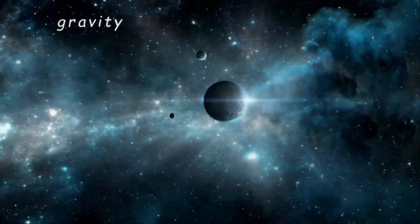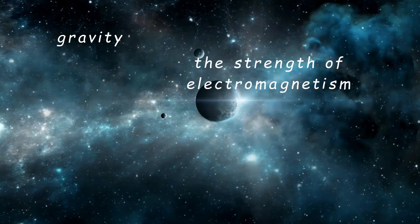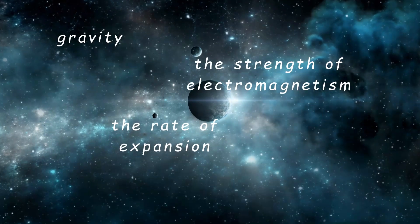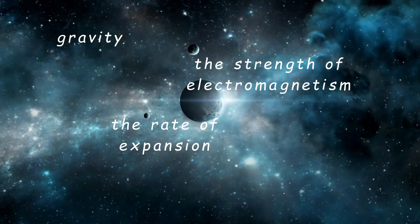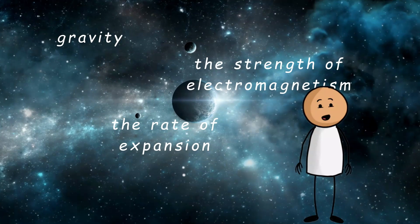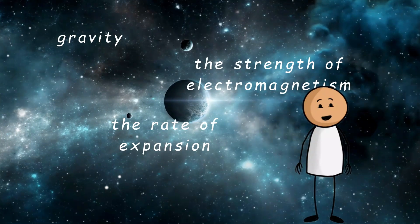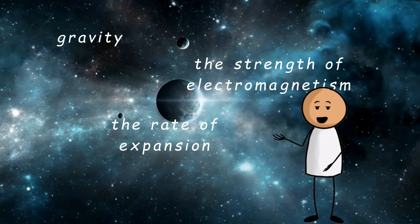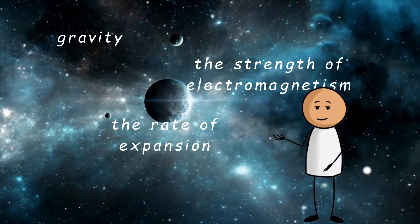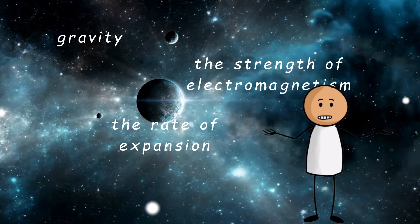Now think of the universe like a cosmic cake. It has a bunch of ingredients like gravity, the strength of electromagnetism, and the rate of expansion after the Big Bang. If any of these were even slightly different, the universe could have collapsed in on itself, flown apart too fast, or never formed atoms at all. No stars, no planets, and definitely no pizza.